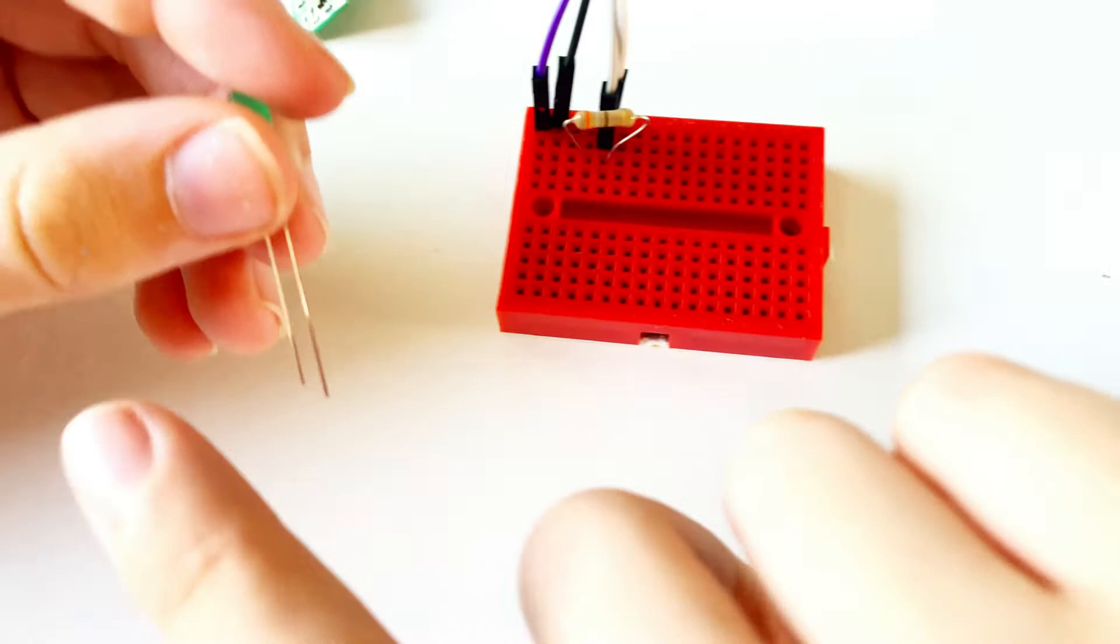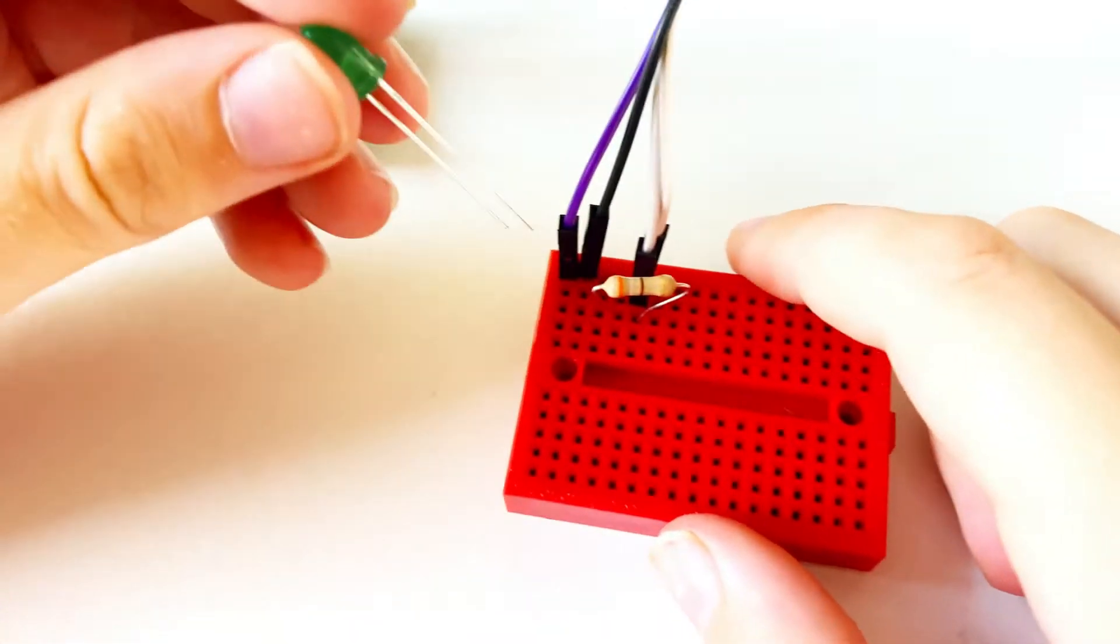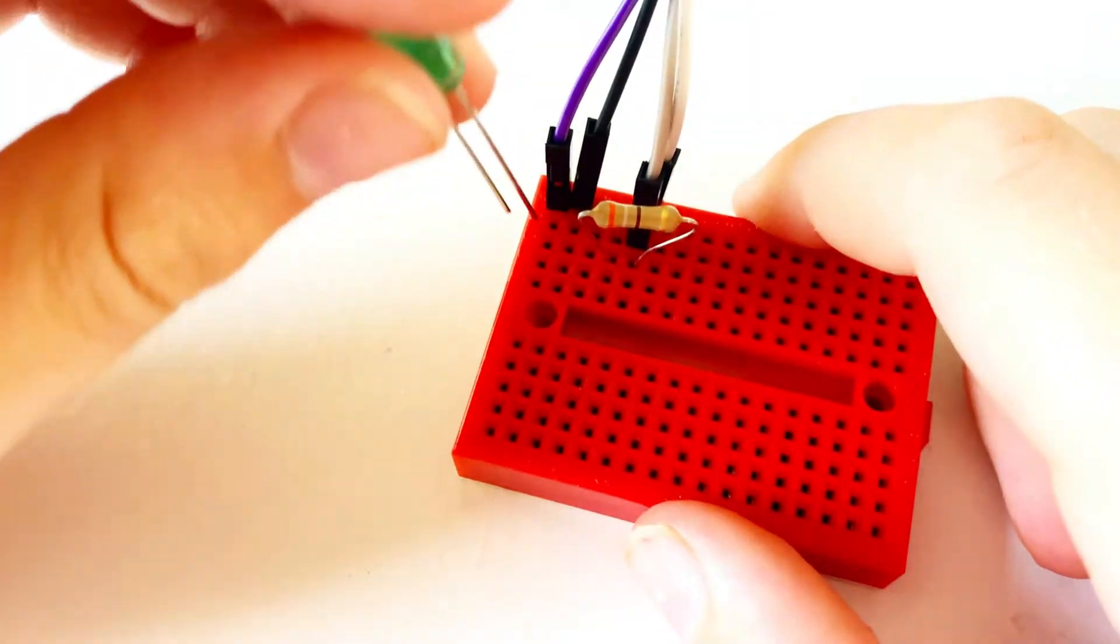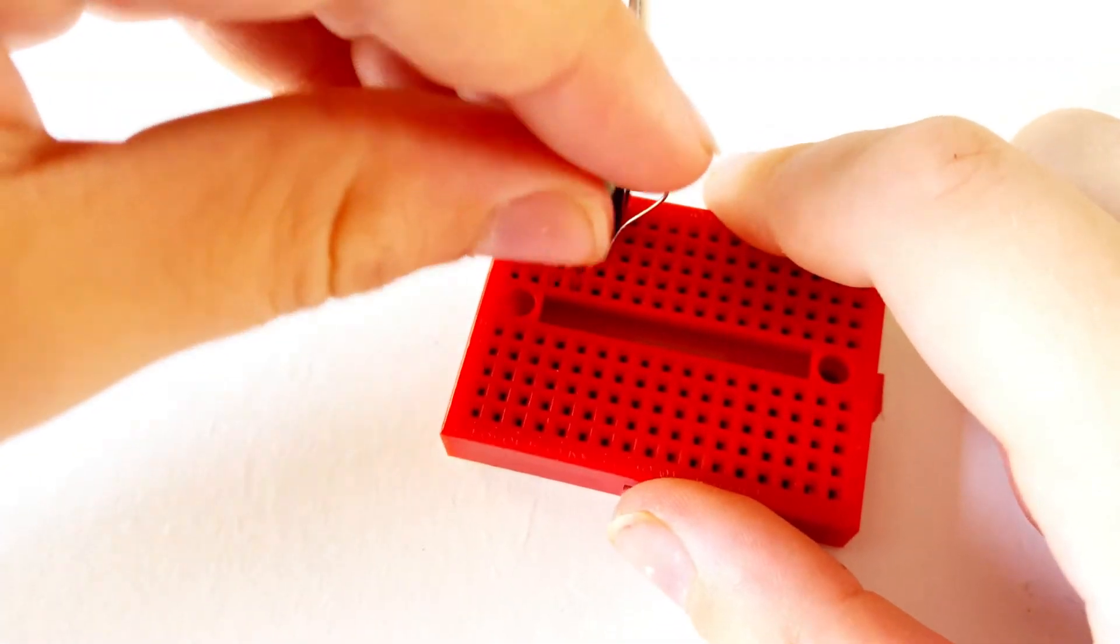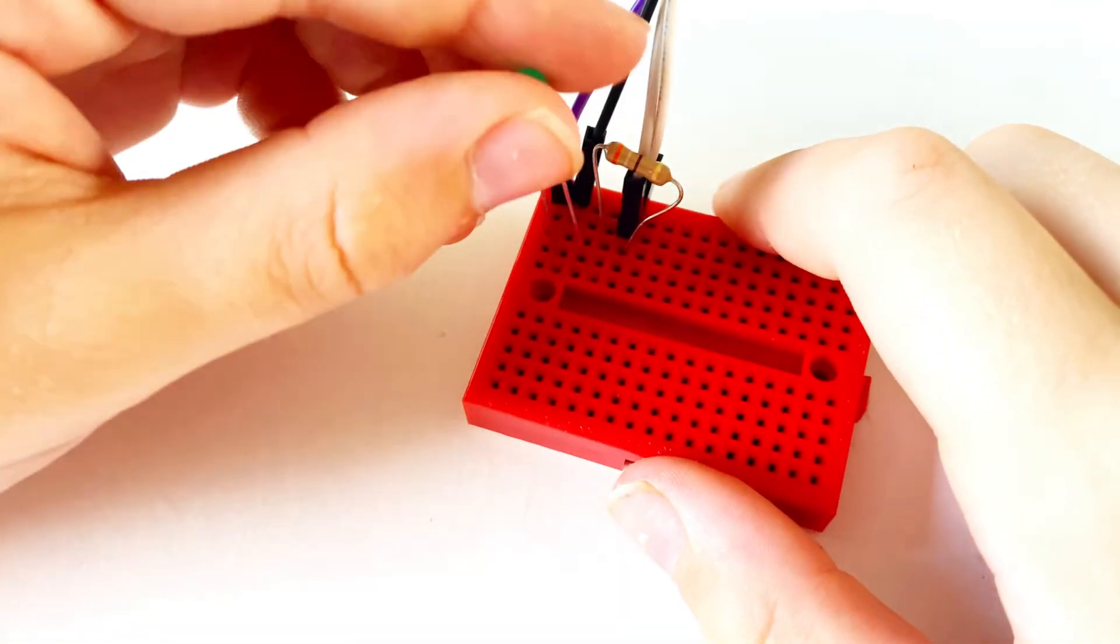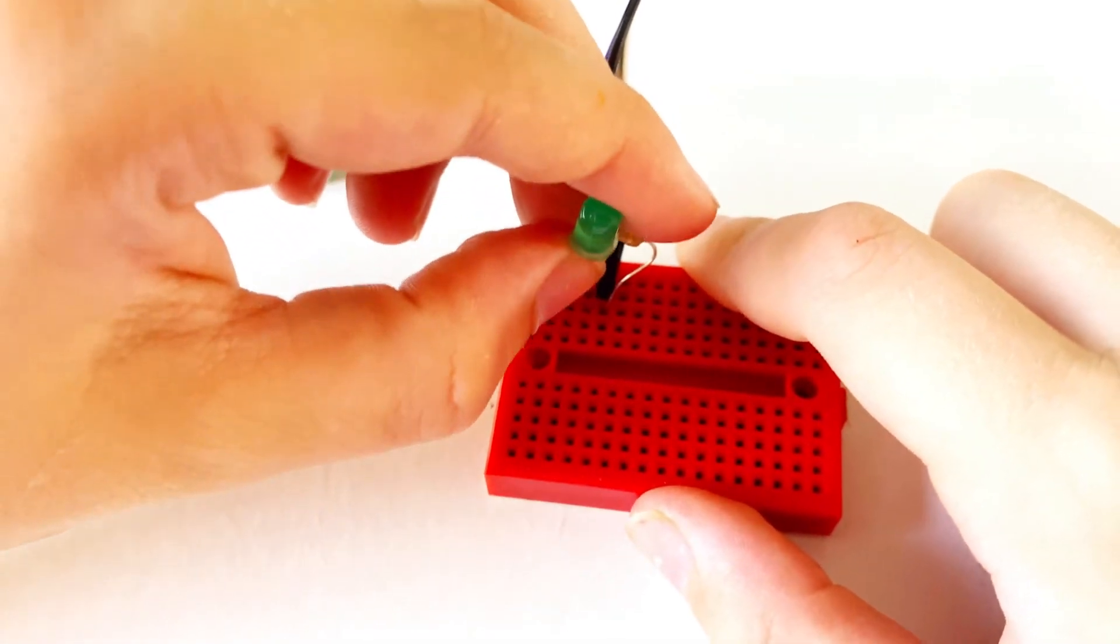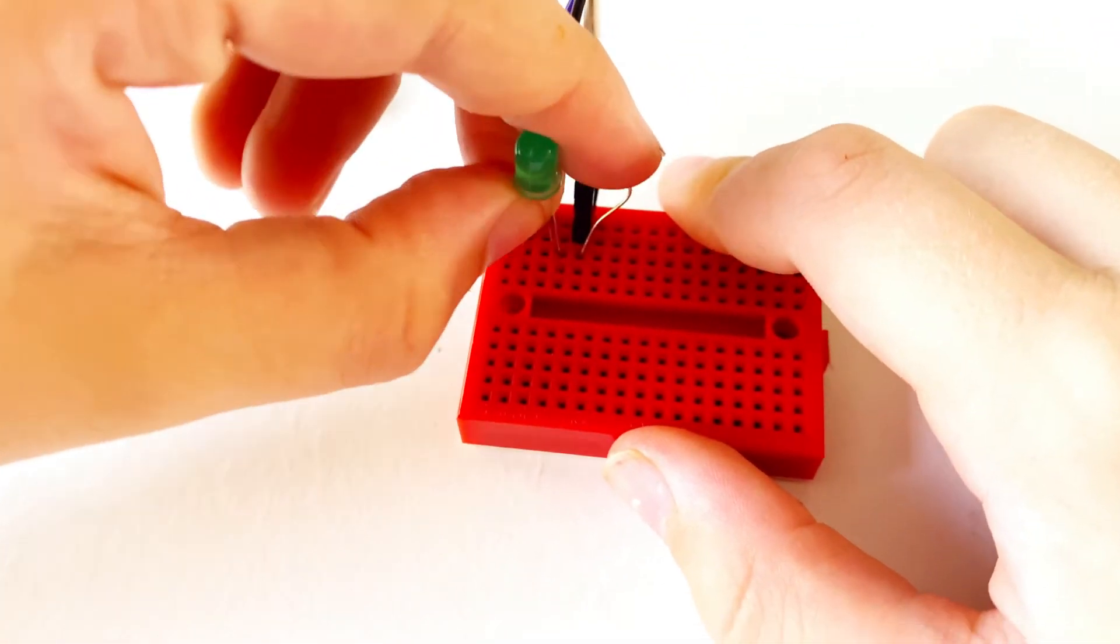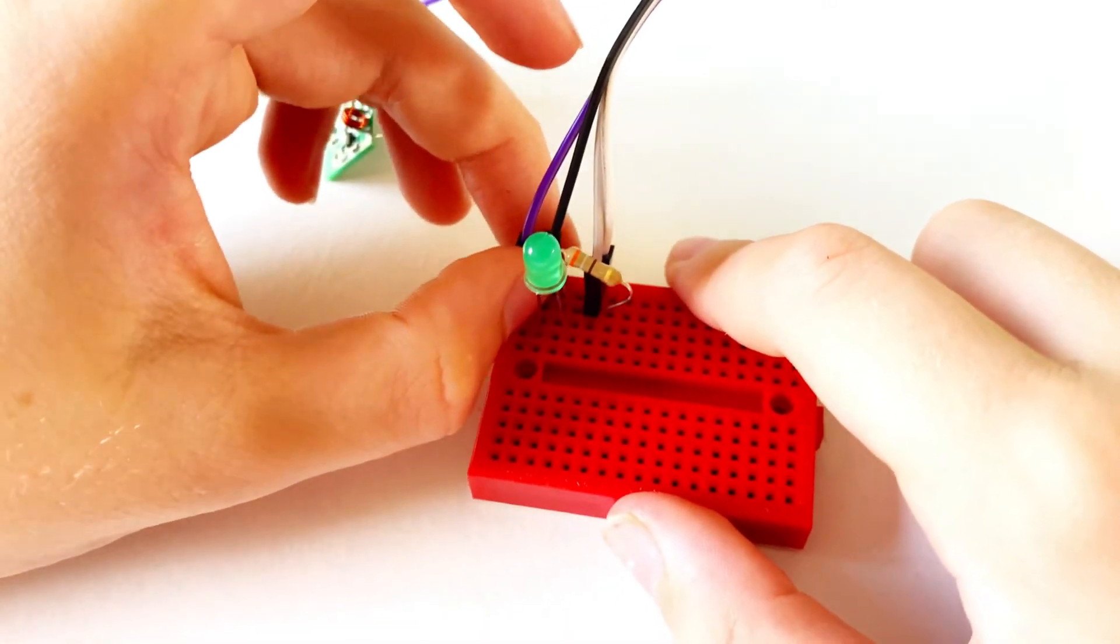Now we can get the long or positive leg of the LED and put it in the same row of holes as the resistor, and then stretch the other leg over to the same row of holes as the black wire or the GND wire.